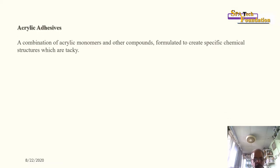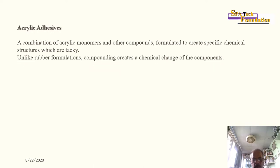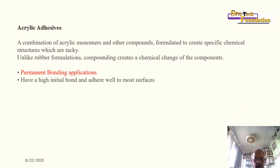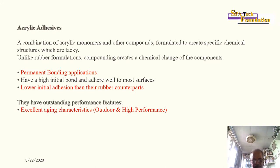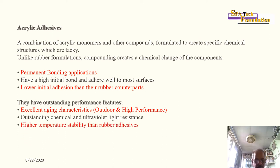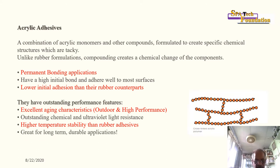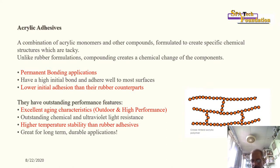Acrylic adhesives are a combination of acrylic monomers and other compounds formulated to create a specific chemical structure that is tacky. Unlike rubber formulations, compounding creates a chemical change in the components. They are used for permanent bonding applications, have high initial bond strength, and adhere well to most surfaces, though with lower initial tack than rubber. They have outstanding aging characteristics, excellent outdoor and high-performance capabilities, and superior chemical and UV light resistance with higher temperature stability.